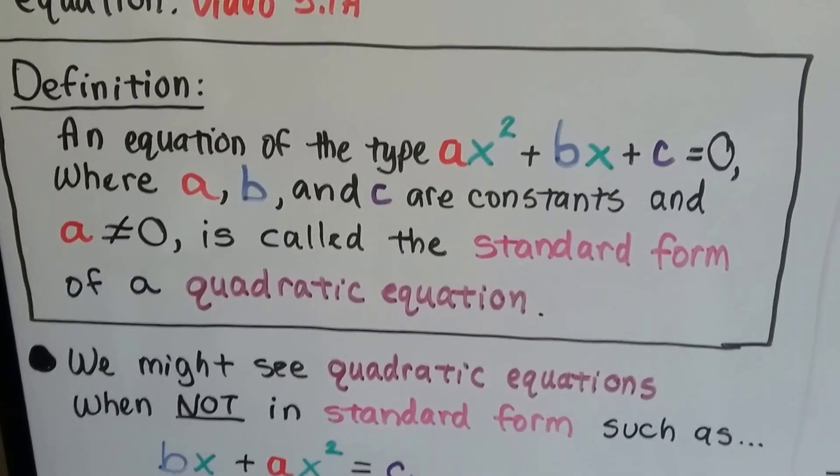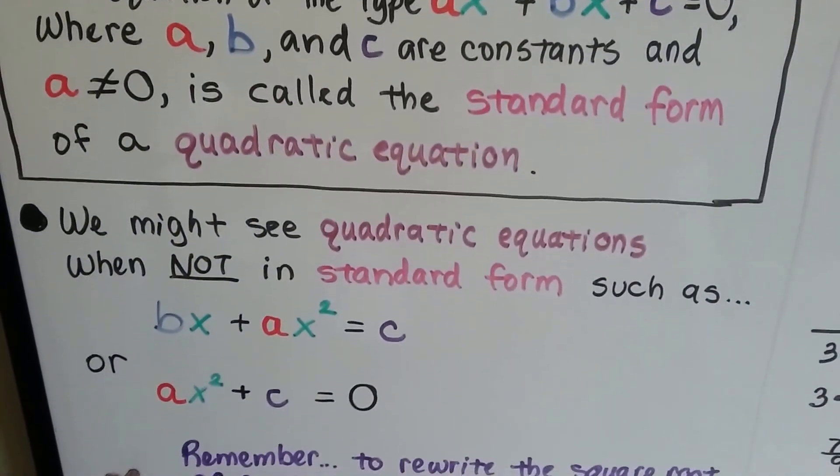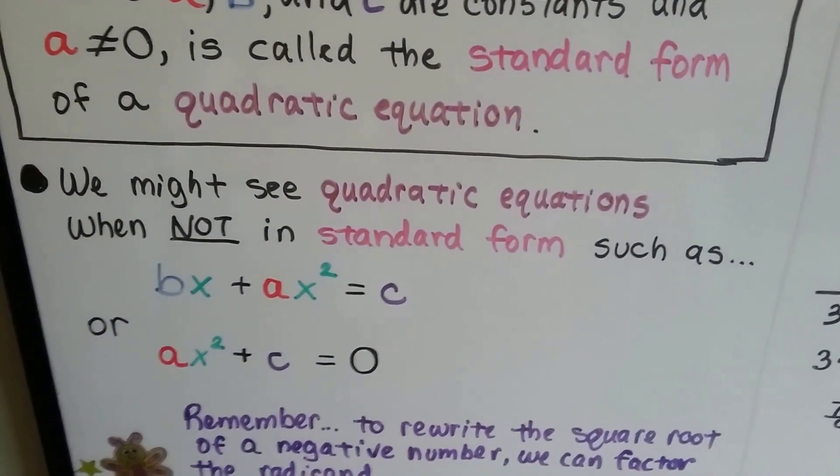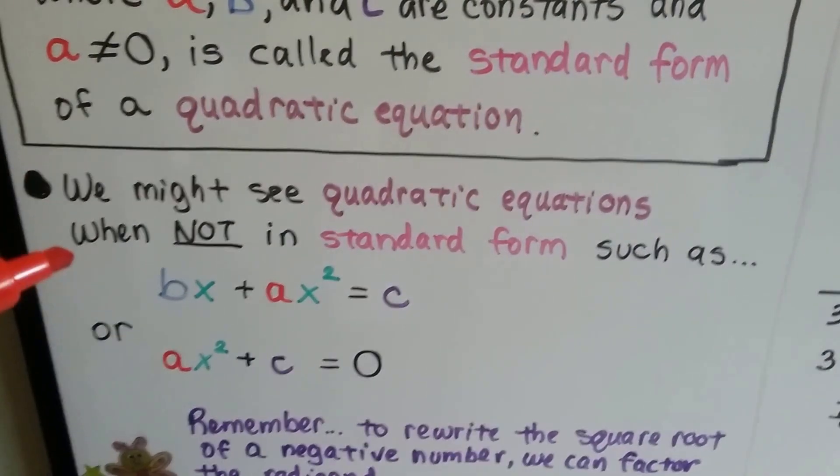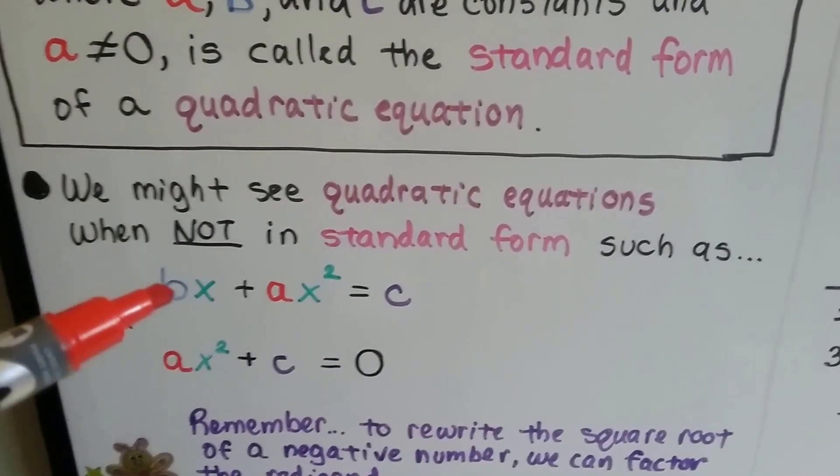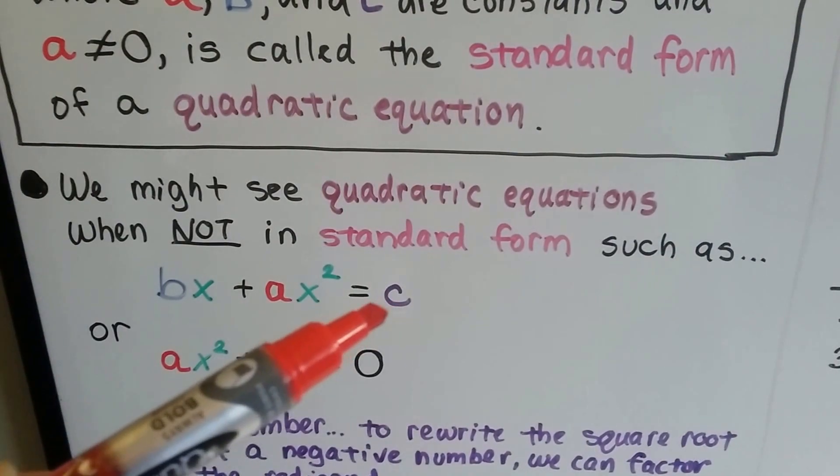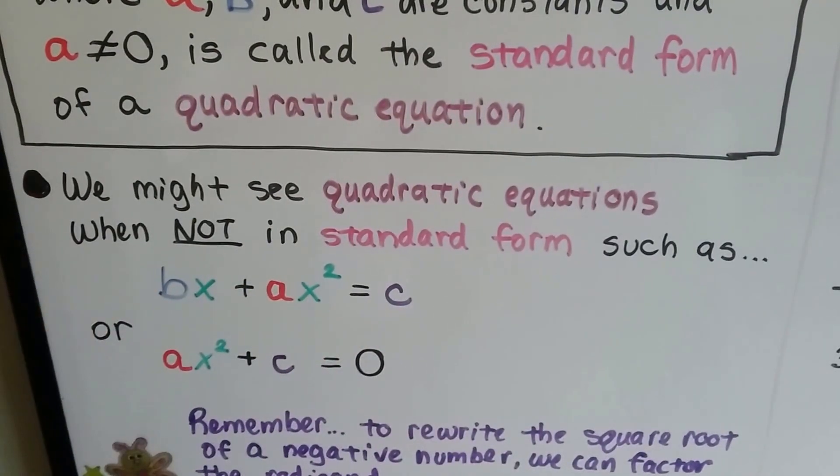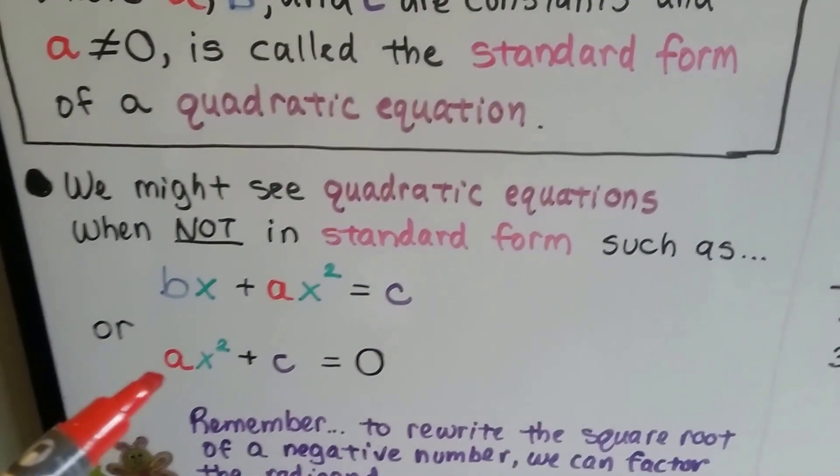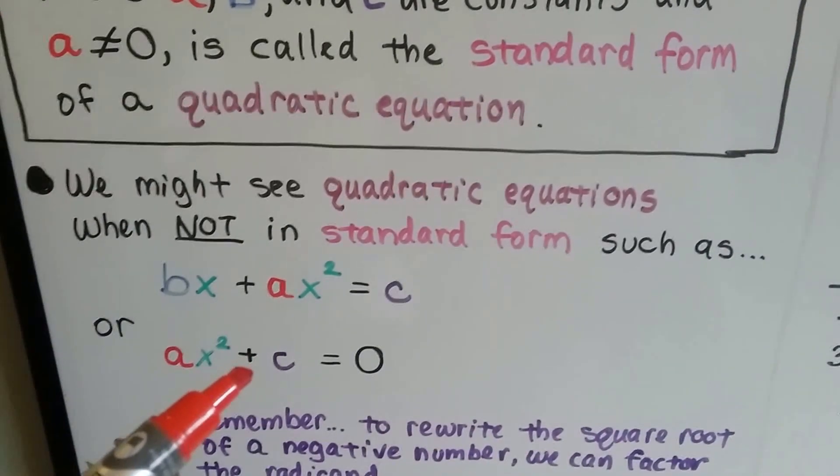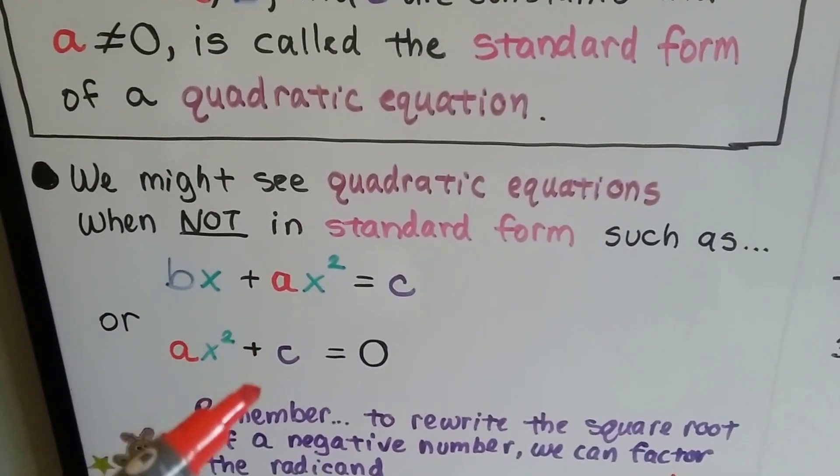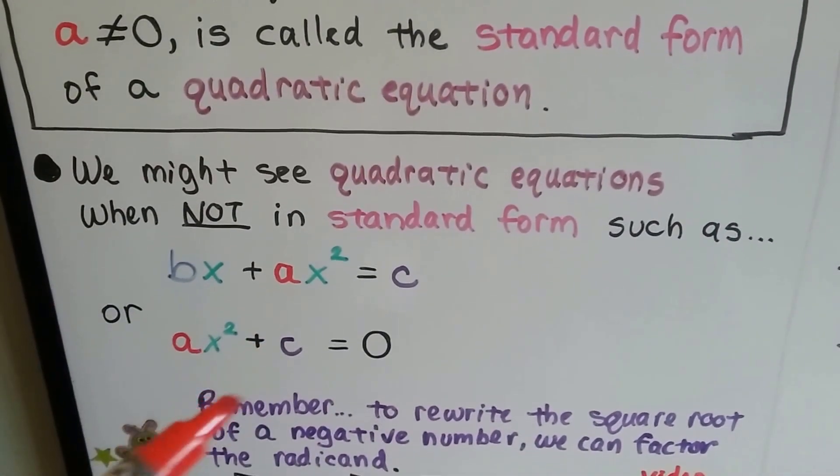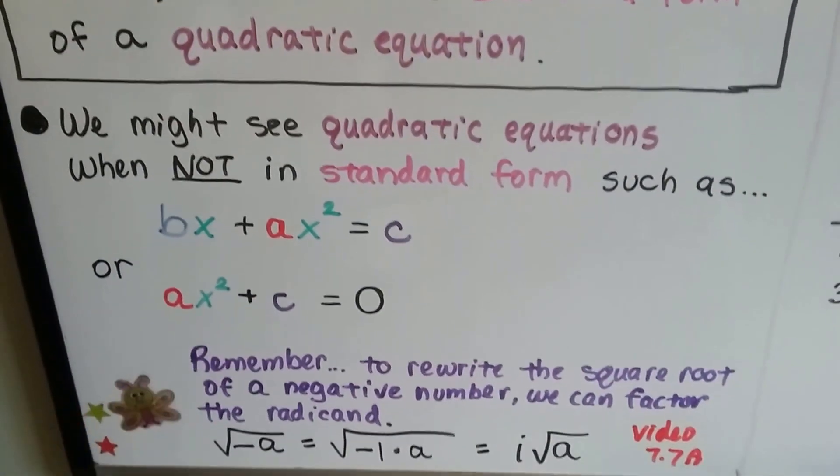We talked about this back in Algebra 1 last year. We might not see quadratic equations in standard form. So if you see bx plus ax squared equals c, that's a quadratic equation, not in standard form. Or this one, look, this is b equals zero. There is no b value. See, it's missing. We just have ax squared plus c equals zero.